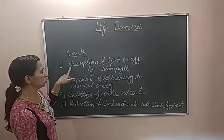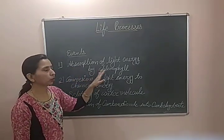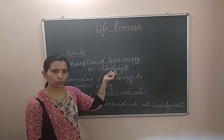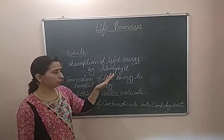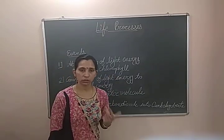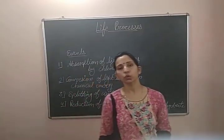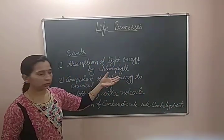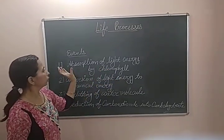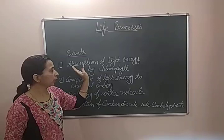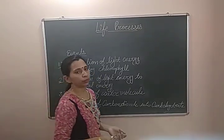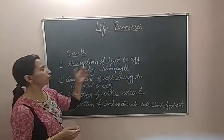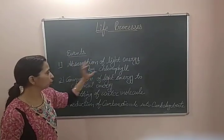The first event of photosynthesis is the absorption of light energy by chlorophyll. As we studied in the raw materials, chlorophyll is an important requirement for photosynthesis. Chlorophyll is the molecule in the cell organelle which is required for the absorption of light energy. Chlorophyll absorbs and captures the solar energy — this is the first event of photosynthesis.